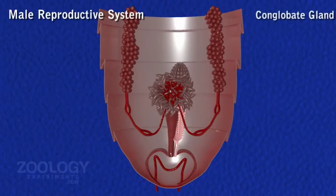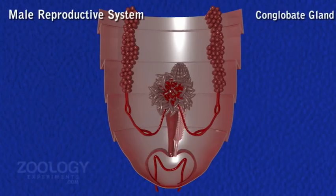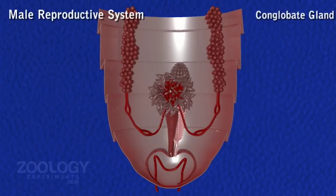Conglobate Gland. It is a large, multi-lobed, leaf-like or club-shaped gland present below the ejaculatory duct and reaching anteriorly up to the fifth abdominal segment. It is also known as the phallic gland. Its narrow duct opens into the genital pouch by the side of the male genital pore. The conglobate gland secretes the outer layer of the spermatophore. The mushroom and conglobate glands form accessory reproductive glands.